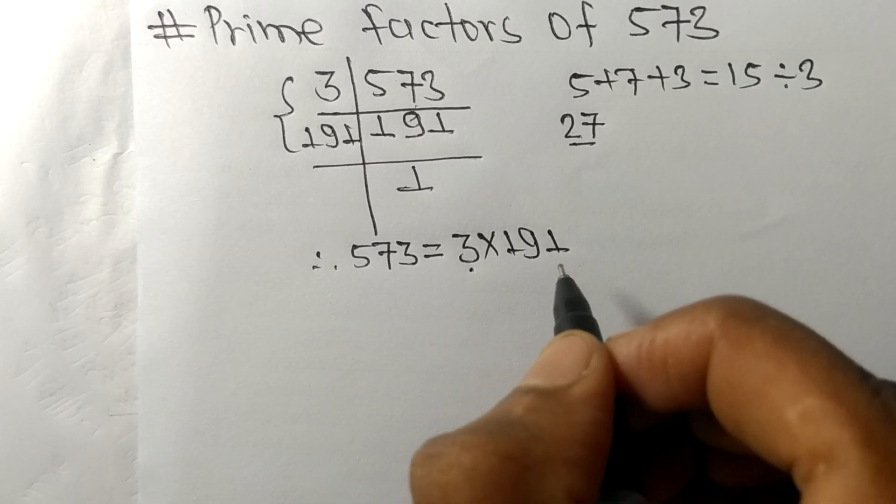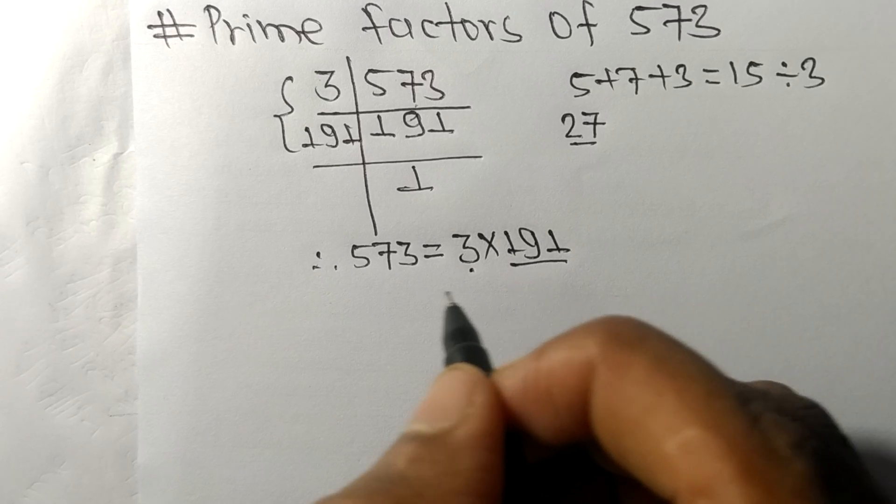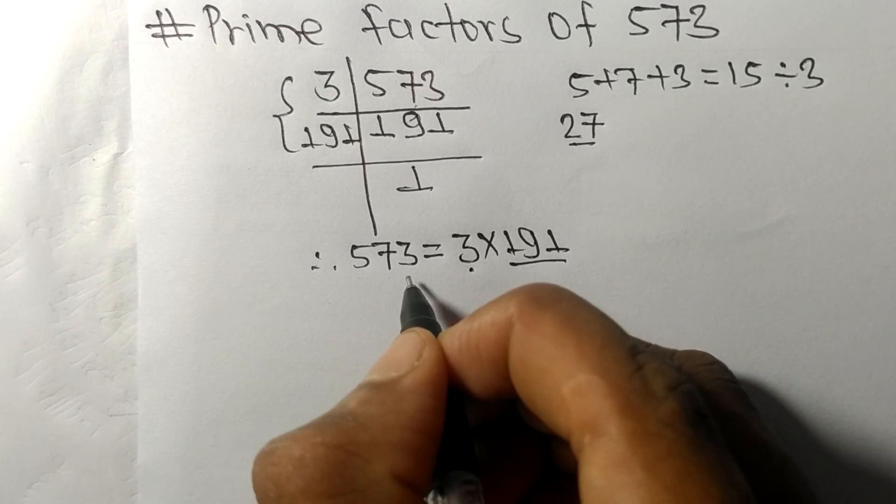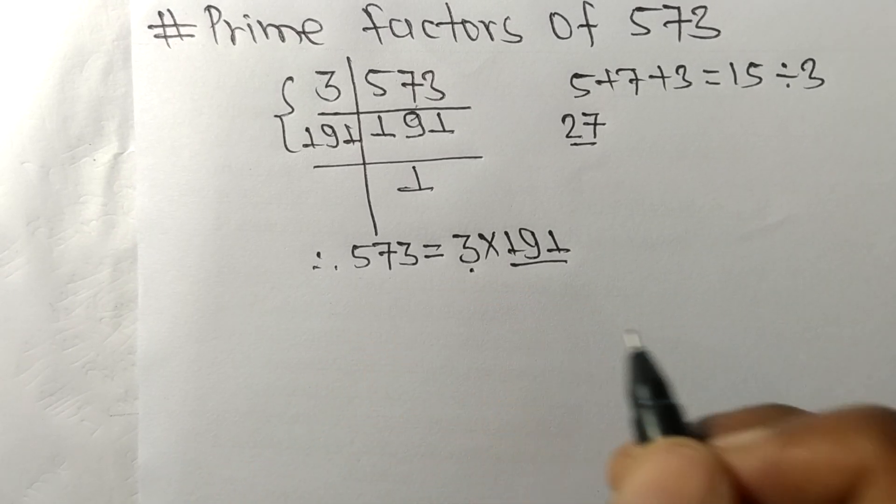So 3 and 191 are the prime factors of 573. So this much for today and thanks for watching.